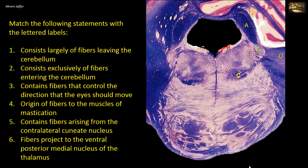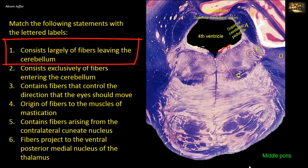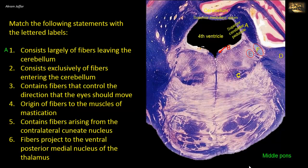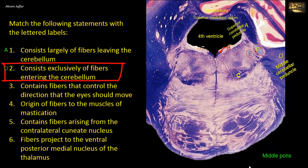Match the following statements with the lettered labels. This is a section at the middle of the pons showing part of the cerebellum located posteriorly and laterally. The fourth ventricle is roofed by the superior cerebellar peduncles A on each side and connected by the superior medullary velum, a thin layer of white matter. Statement 1, which consists largely of fibers leaving the cerebellum, matches well with A. Note that the pons is connected to the cerebellum by the middle cerebellar peduncle D, which consists exclusively of fibers entering the cerebellum, thus matching statement 2.